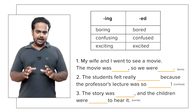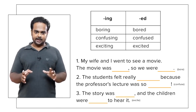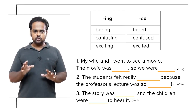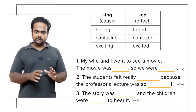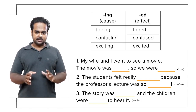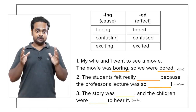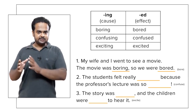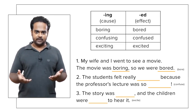OK, now before I give you the answers, let's first understand the difference between ed and ing adjectives. The difference is this: ing adjectives always show cause or reason, and ed adjectives show effect or result. So in the first sentence, my wife and I went to see a movie. The movie was boring, so we were bored. The movie was the reason or cause and our feeling, bored, was the result or the effect.